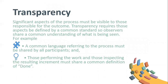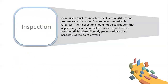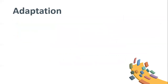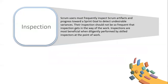Let's talk about transparency. Significant aspects of the process must be visible to those responsible for the outcome. Transparency requires those aspects be defined by a common standard, so observers share a common understanding of what is being seen. For example, a common language referring to the process must be shared by all participants, and those performing the work and those inspecting the resulting increment must share a common definition of done. Inspection: Scrum users must frequently inspect Scrum artifacts and progress towards a sprint goal to detect undesirable variances. The inspection should not be so frequent that it gets in the way of the work. Inspections are most beneficial when diligently performed by skilled inspectors at the point of work.